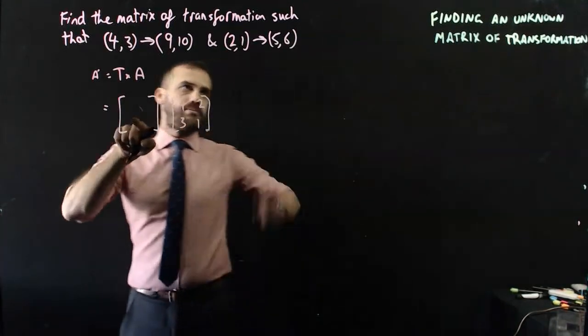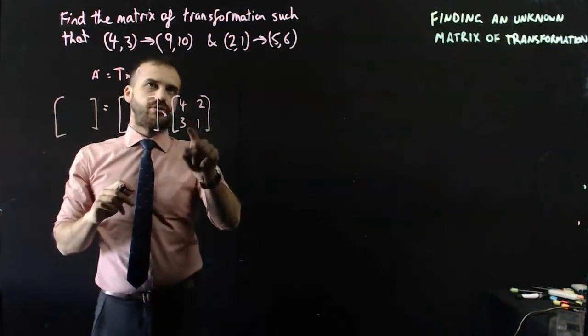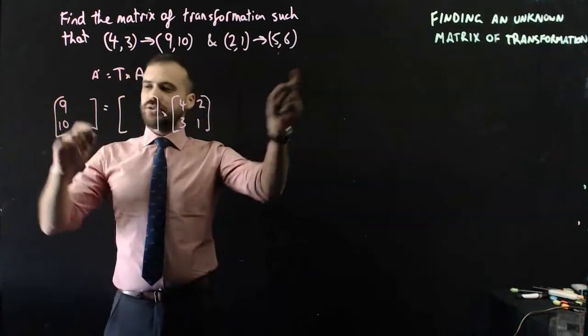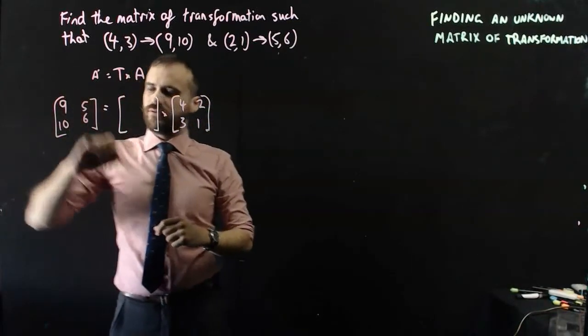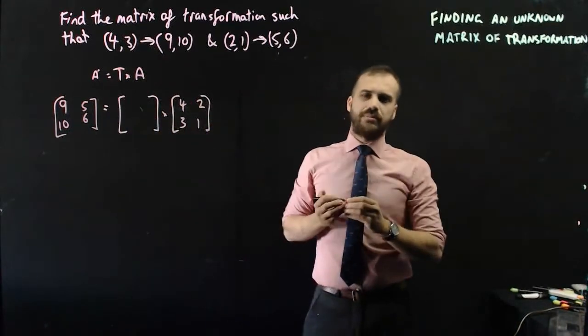This, we don't know, but the image matrix, we do know. (4,3) maps onto (9,10), and (2,1) maps onto (5,6). And, maybe we'll just call that matrix T.